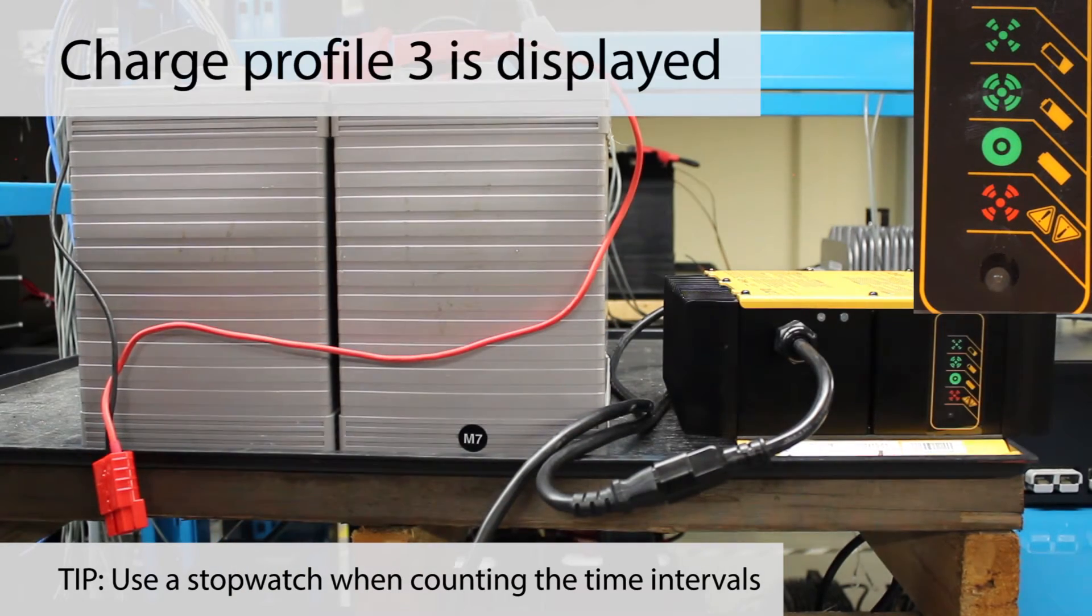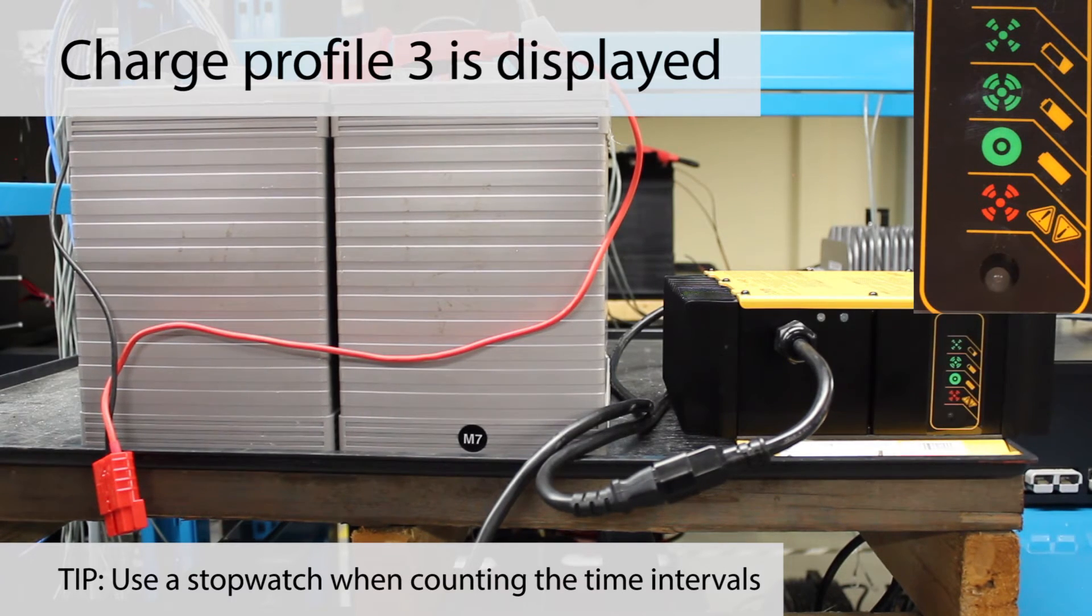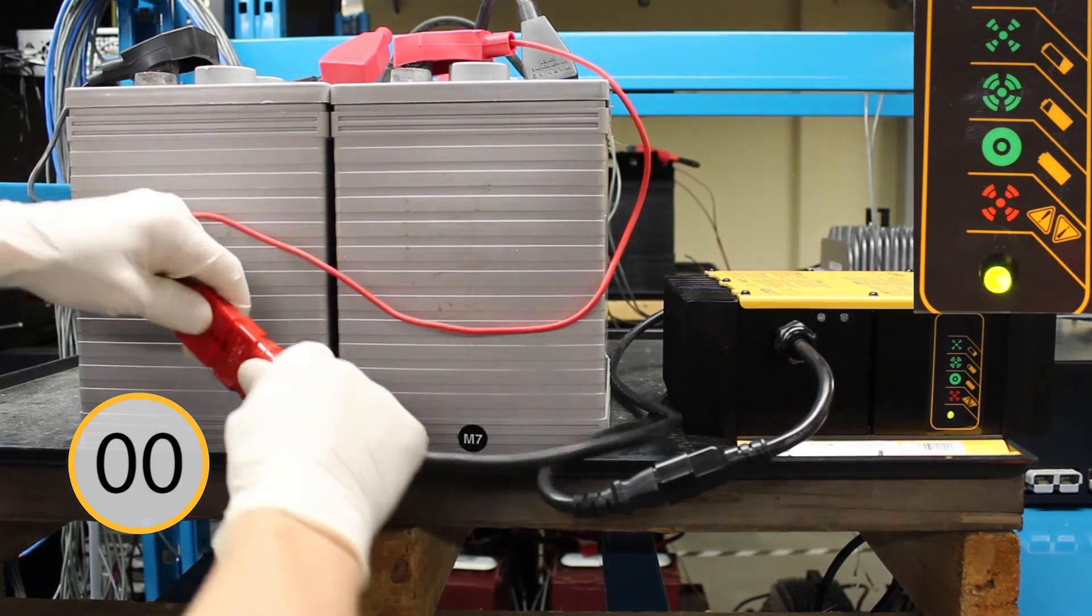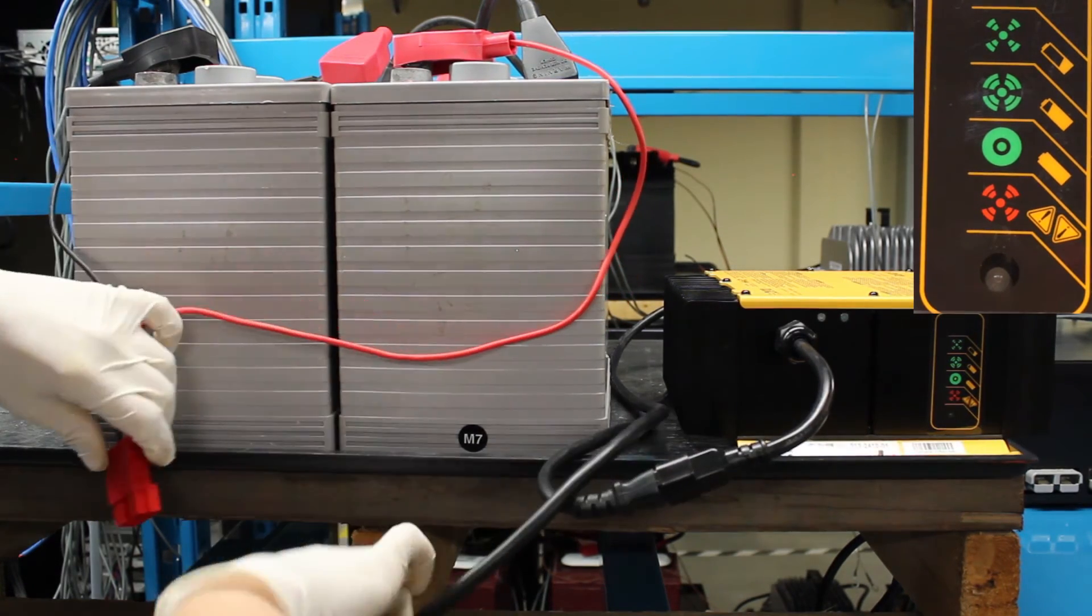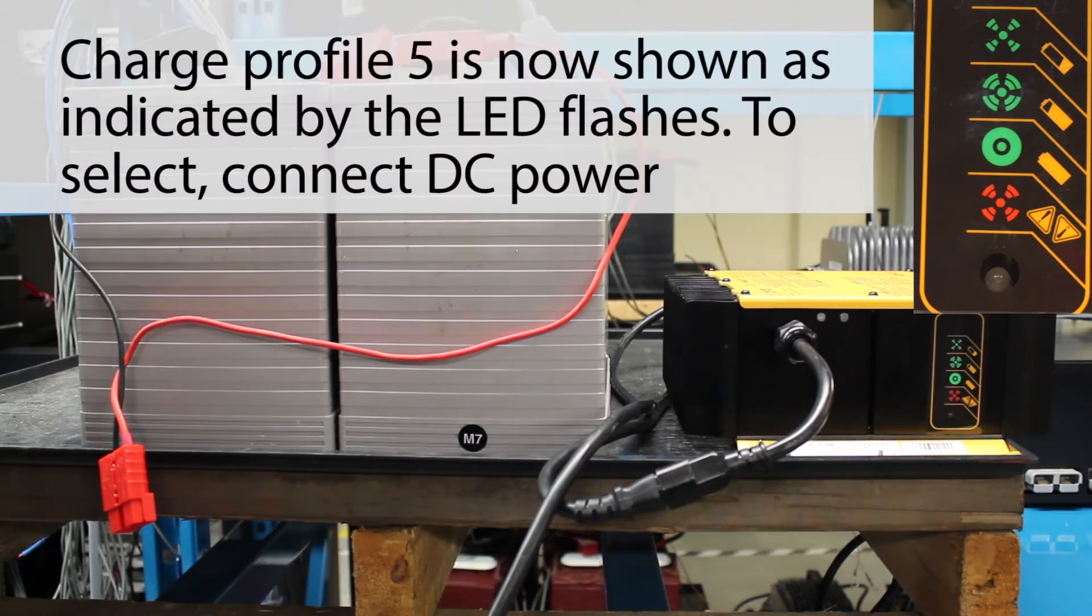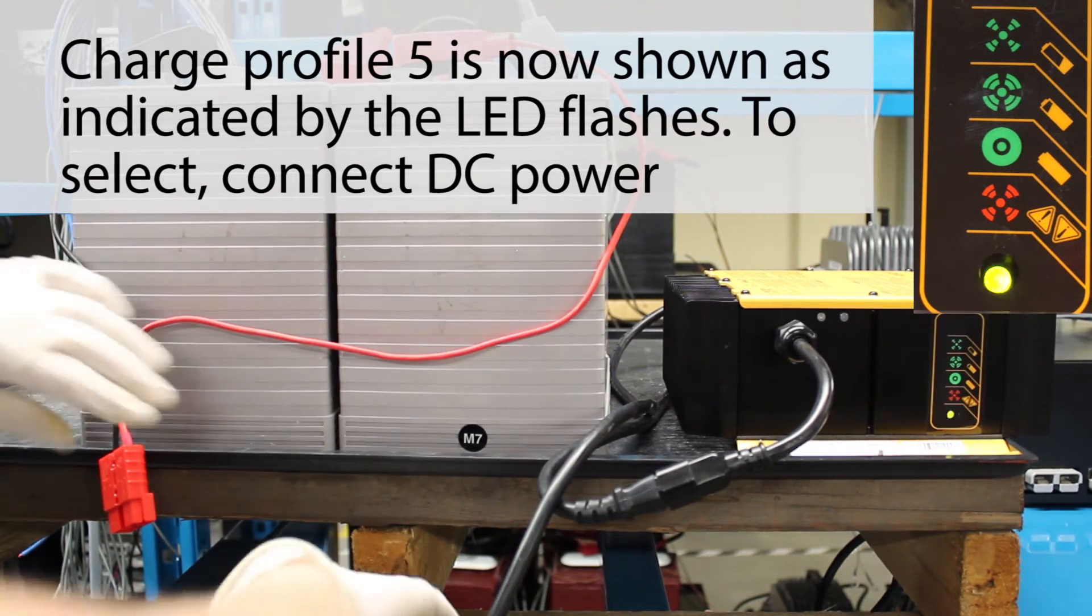Now you can see the charge profile is set to 3. To change again, connect DC power. Charge profile number 5 is now shown as indicated by the LED flashes.